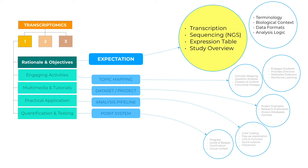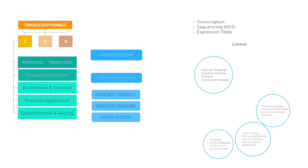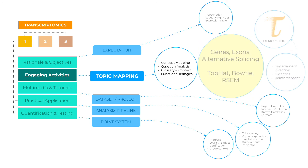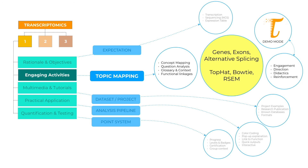To do so, we have to make sure key terms are defined and informatics-related terminology is linked to the biology of transcription. Thus, we can prepare students to have a better understanding of genes, exons, the process of alternative splicing, and how these are represented in RNA-seq data. These terms also help prepare students to understand the need for certain types of analysis methods, such as TopHat, Bowtie, or RSEM.